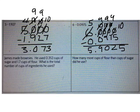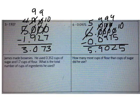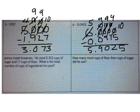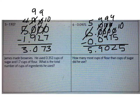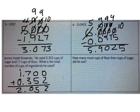We also talked about decimal addition and subtraction word problems. Let's read the first example. James made brownies. He used 352 thousandths cups of sugar and 1 and 7 tenths cups of flour. What is the total number of cups of ingredients he used? What operation do I need to solve this problem? I need to use addition — James is putting together ingredients. Go ahead and solve that problem now. The correct answer is 2 and 52 thousandths cups of ingredients.